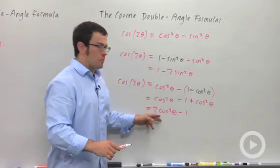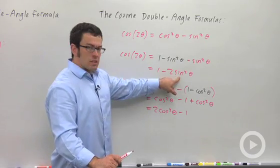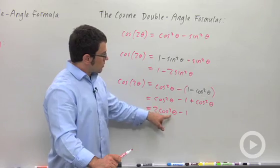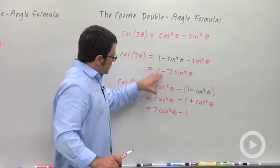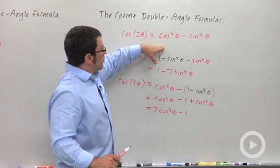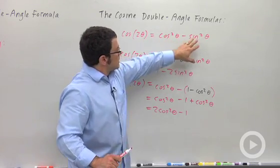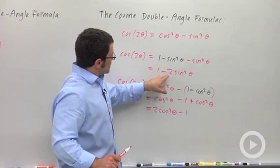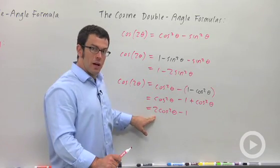These two forms are very similar: cosine two theta equals one minus two sine squared theta, and cosine two theta equals two cosine squared theta minus one. To remember which is which, recall the original cosine double angle formula — cosine is the one that's positive, sine is the one that's negative. So in the other forms, sine is still negative and cosine is still positive.